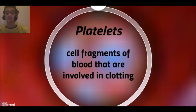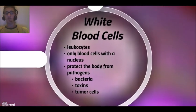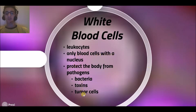The platelets are cell fragments of blood that are involved in clotting. The white blood cells are the only blood cells with a nucleus — they protect the body from pathogens like bacteria, toxins, and tumors.